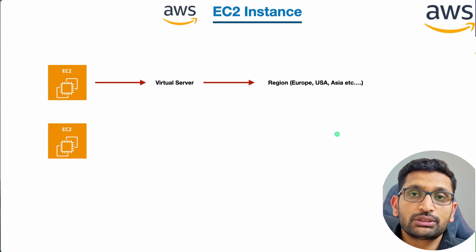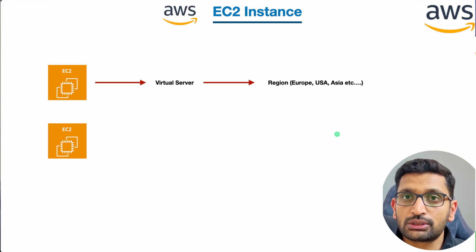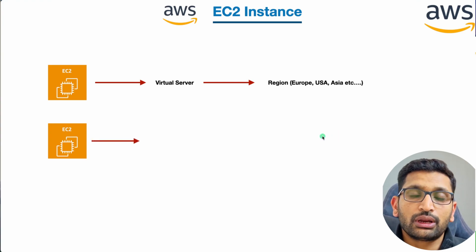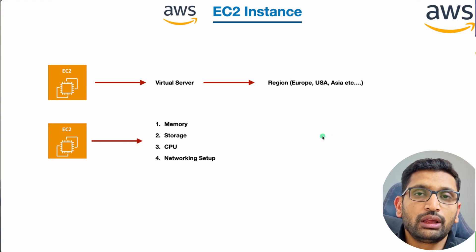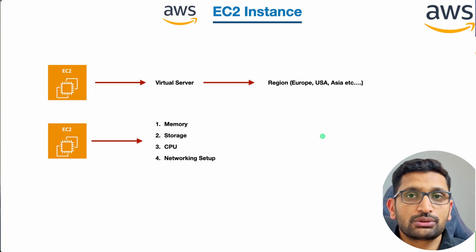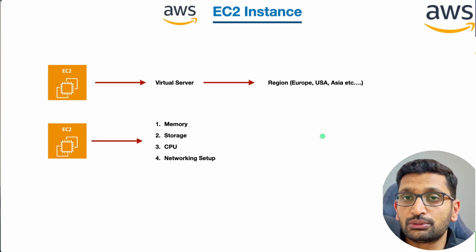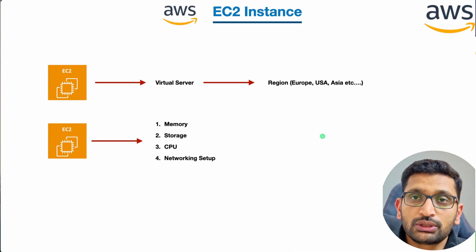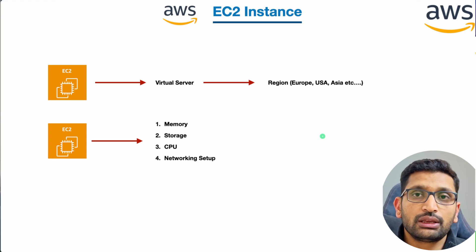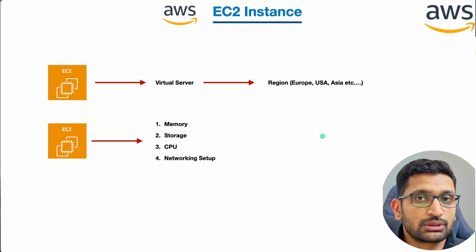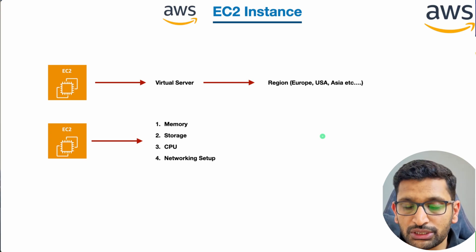How about the memory, CPU, and disk space — how do we set up all those things? In AWS you can set up your memory, storage, CPU, and even networking for your EC2 instance. It's just like setting up all those things one by one when you are starting your virtual server, which is your EC2 machine.